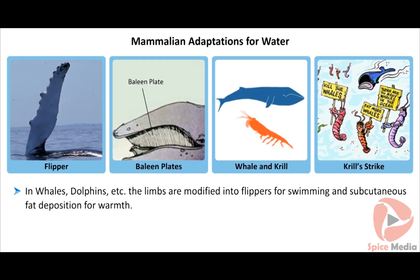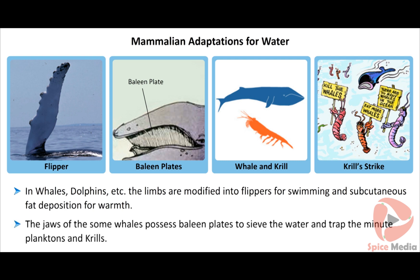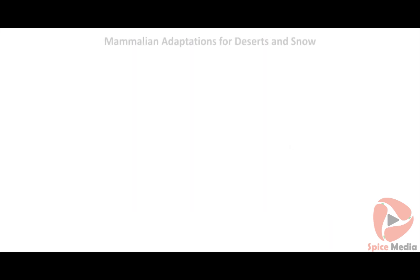In marine forms like whales, dolphins, etc., the limbs are modified into flippers for swimming and subcutaneous fat deposition for warmth. The jaws of some whales possess baleen plates to sieve the water and trap the minute planktons and krills.